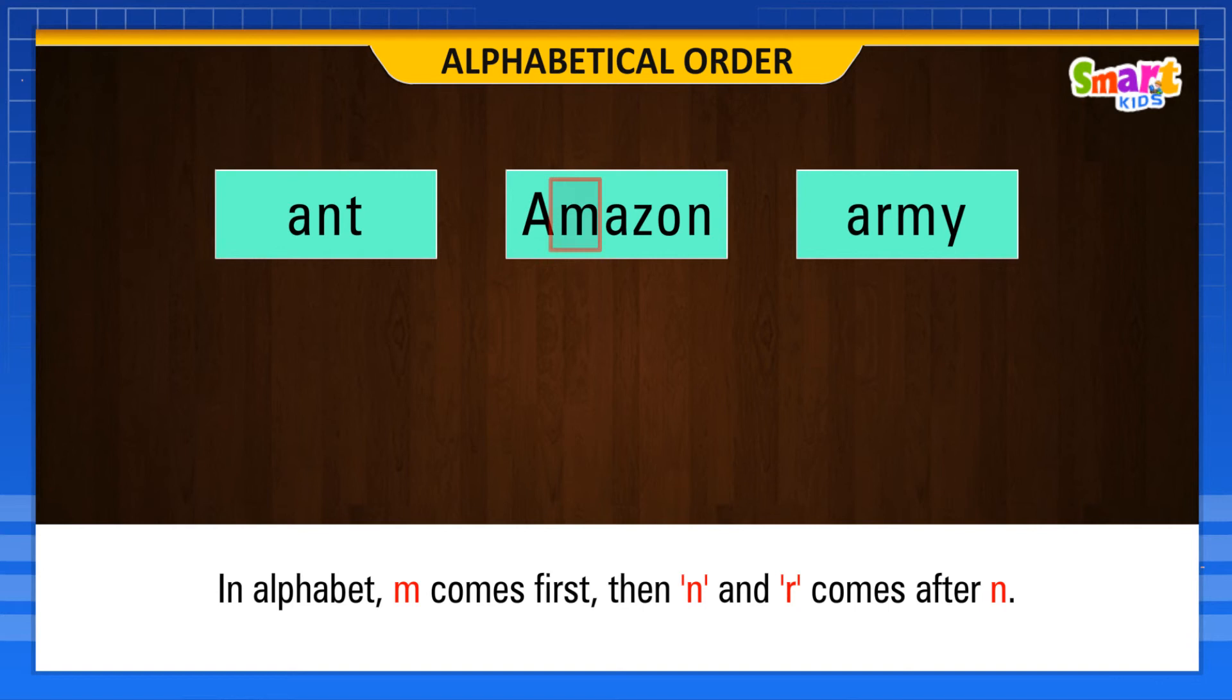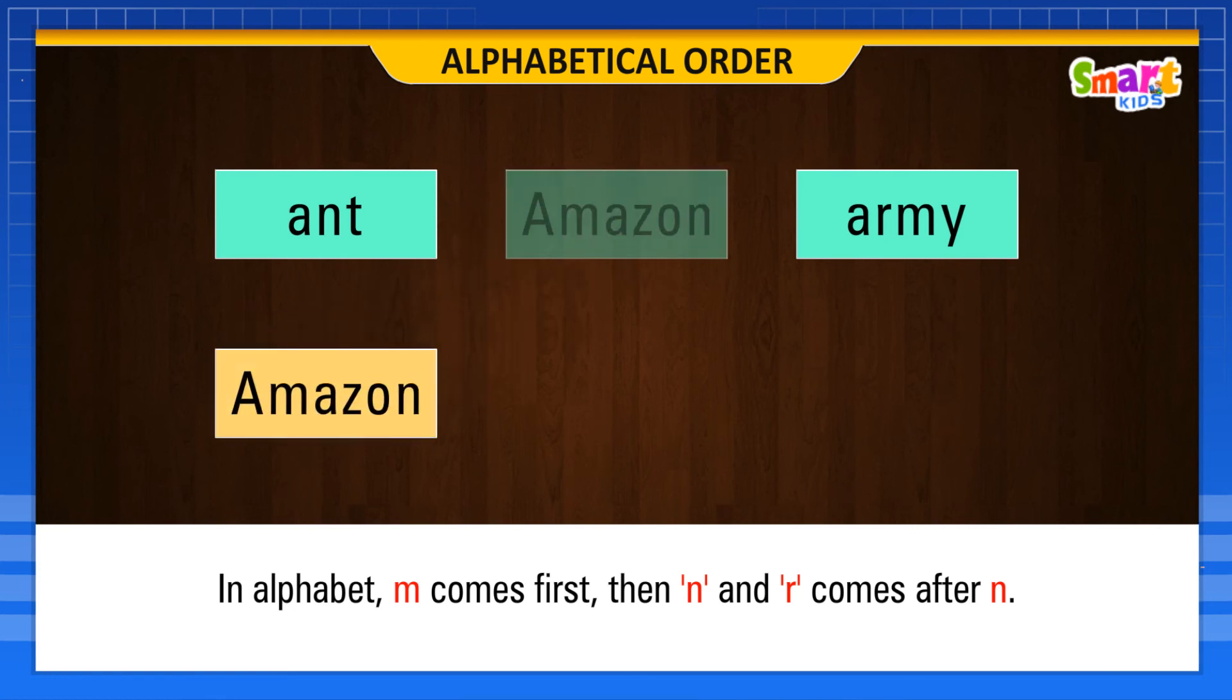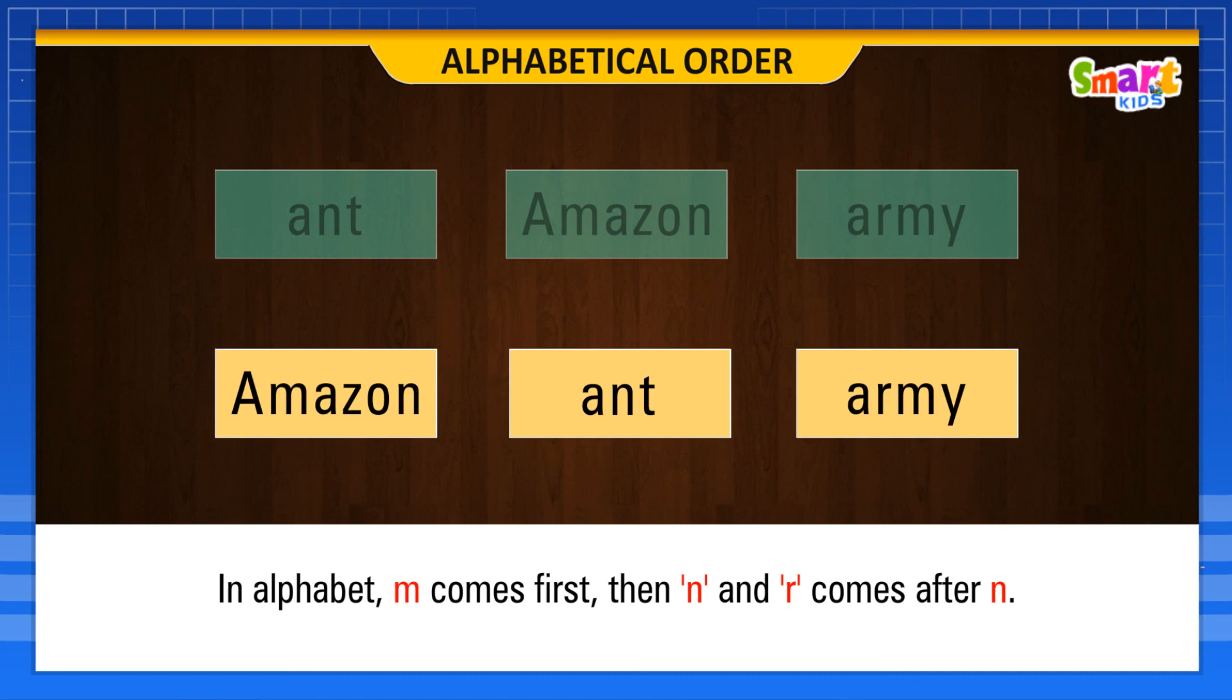In alphabet, M comes first, then N, and R comes after N. So, the alphabetical order is Amazon, Ant, and Army.